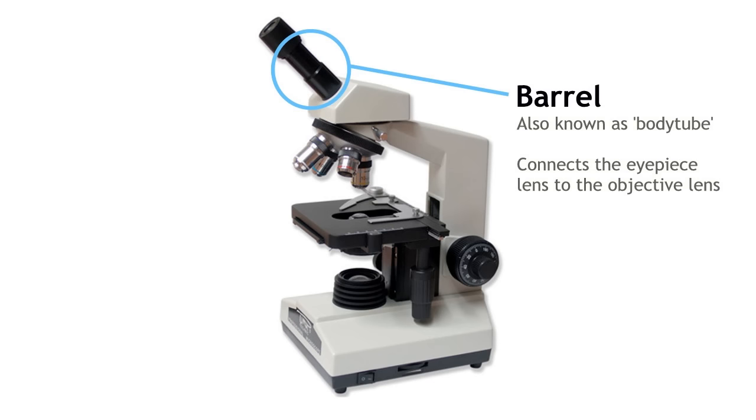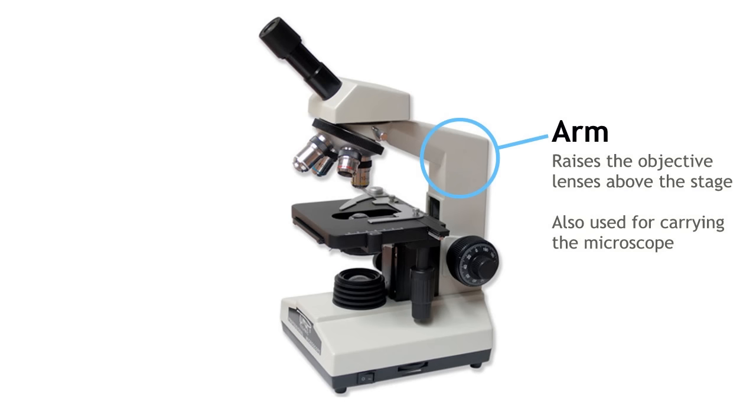The barrel, also known as the body tube, connects the eyepiece lens to the objective lens which we'll look at in a minute.